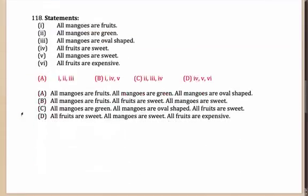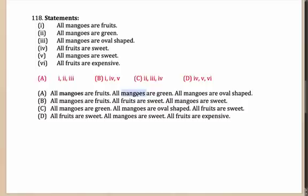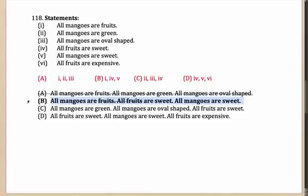Let us try one more example — very similar idea, six statements. I have listed down the four options. Option A: all mangoes are fruits; all mangoes are green. Mangoes are common, but once I eliminate that part I am left with fruits and green, and the conclusion is something totally weird, so this cannot be my answer. Option D: all mangoes are fruits; all fruits are sweet. Fruits are common, and once I eliminate that, I am left with all mangoes are sweet, which is the given conclusion. So D is indeed my correct answer.